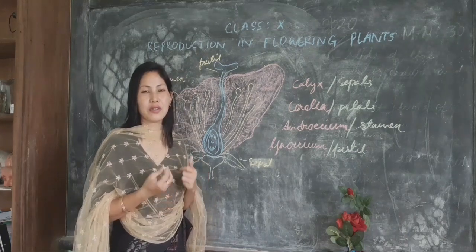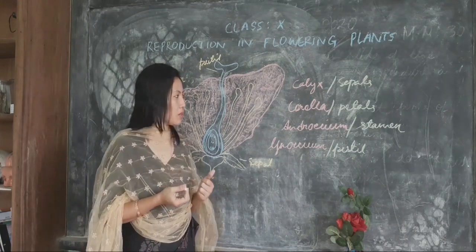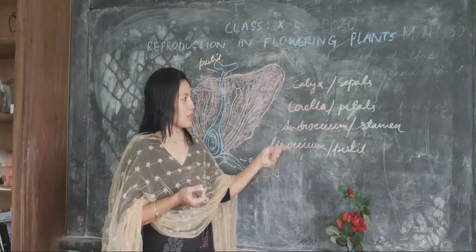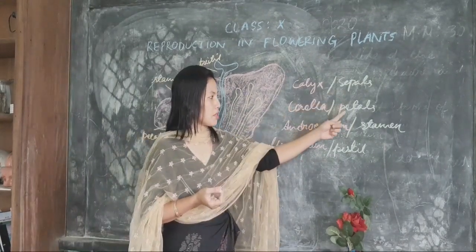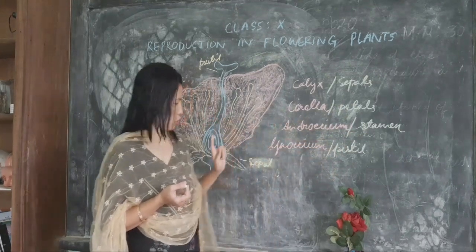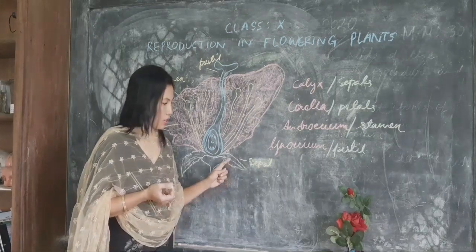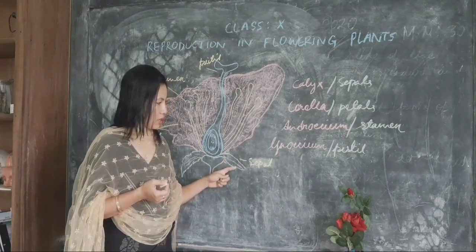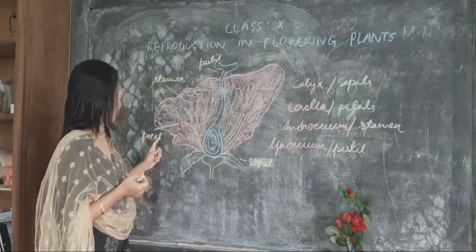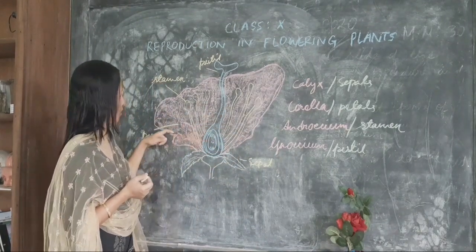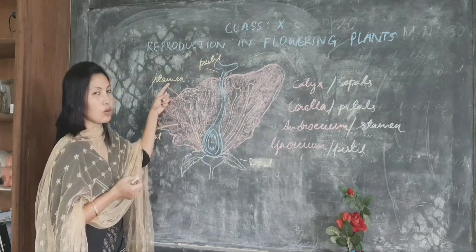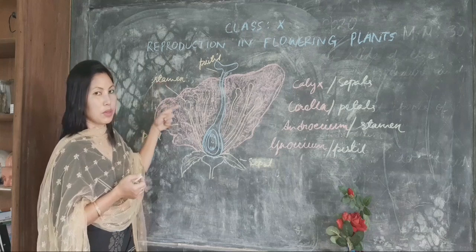Let us see the various parts of a flower: the calyx, corolla, androecium, and gynoecium — also known as the sepals, petals, stamen, and pistil. In the diagram, the leaf-like green structure is the sepal. The colorful pink one is the petal. The yellow structure is the stamen or androecium, the main reproductive structure.